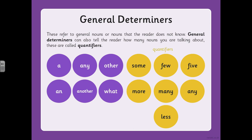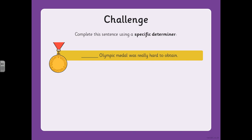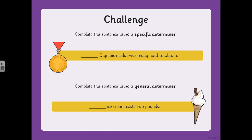Your first little task is to complete this sentence using a specific determiner: 'something Olympic medal was really hard to obtain.' The other one is to complete this sentence using a general determiner: 'something ice cream costs two pounds.' Please write those two sentences into your English book and underline the two determiners you use. Come back to the video when you're ready.